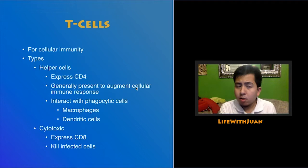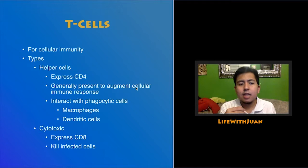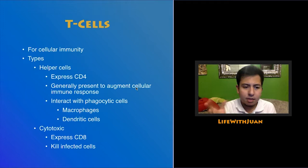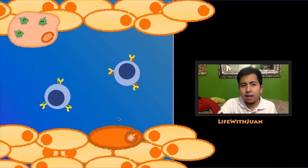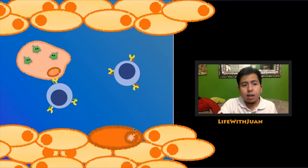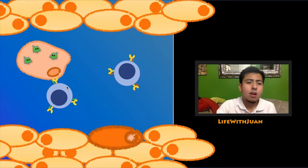Next, we have T cells. Because B cells are important for humoral immunity, T cells are important for cellular immunity. There are two kinds: helper T cells, which augment the cellular immune response and express CD4, interacting with phagocytic cells like macrophages and dendritic cells; and cytotoxic T cells, which express CD8 and kill infected cells. The T helper cell will bind to macrophages that have phagocytosed bacteria — macrophages express bacterial antigens on their surface, and that's what the T cell recognizes via CD4 and MHC2.